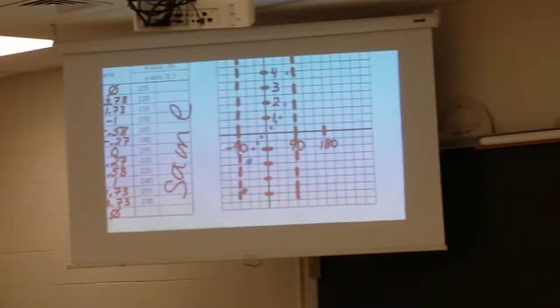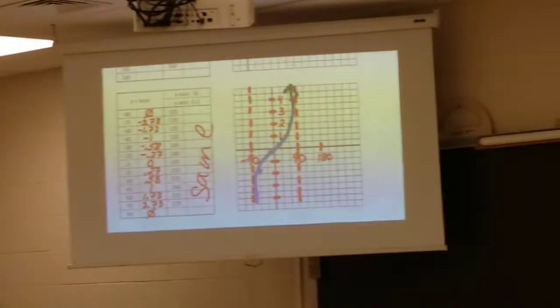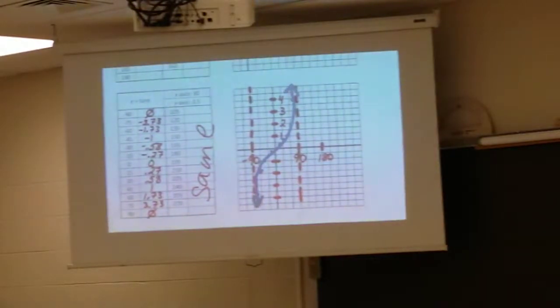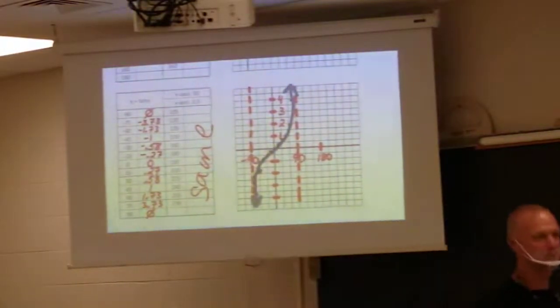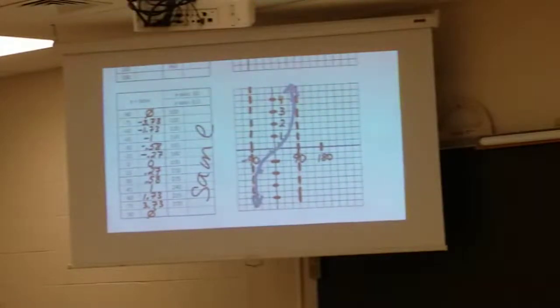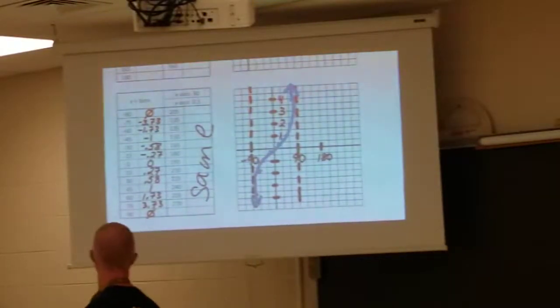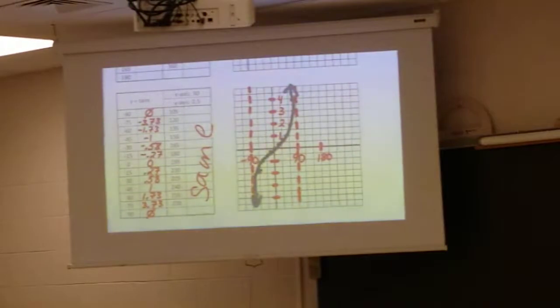This is called the tangent wave, and I want to connect the dots for you. That's why we're doing this together. If you connect the dots, especially with the asymptotes, you end up with this graph that curves and then seems to shoot straight up or straight down. Now, that's because it's not able to get to that asymptote. It's just going to keep going up, up, up, or down, down, down to infinity or negative infinity. And again, we get what's called a tangent wave. And again, this is the tangent.